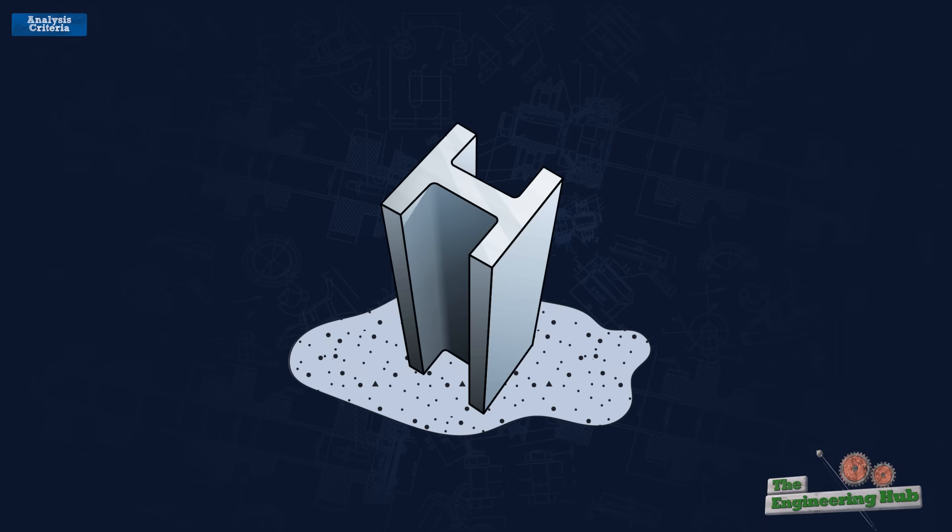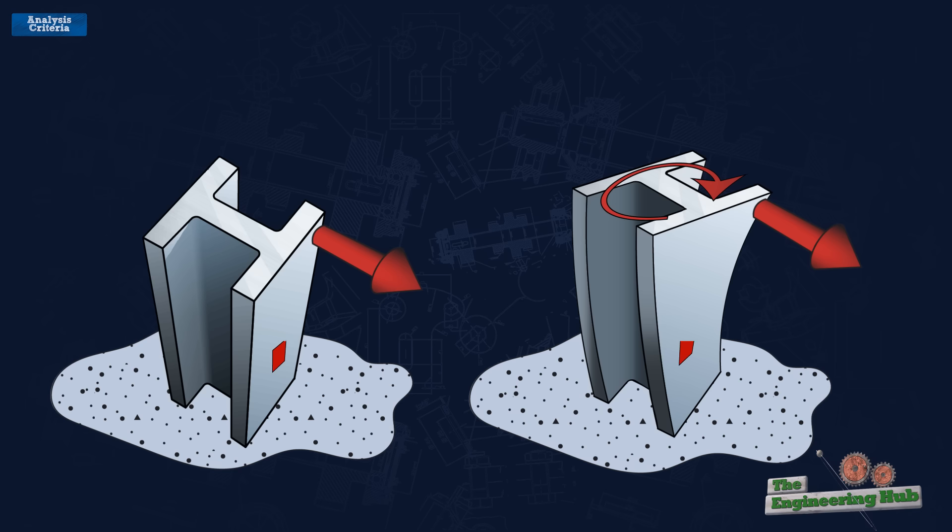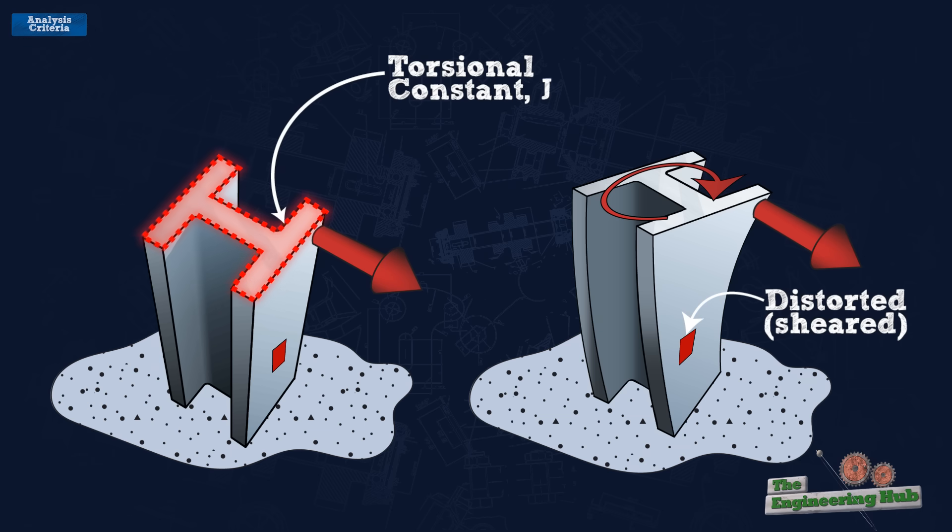Torsion resistance determines how much twisting a section can take before failing in internal shear stress or excessively rotating. This is controlled by the torsional constant j, which essentially measures how much area is closed into the shape. Lots of enclosed area means torque is well resisted.